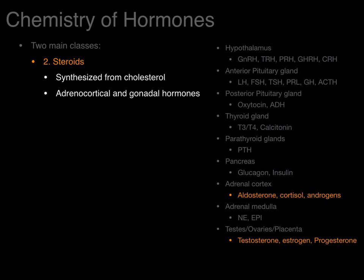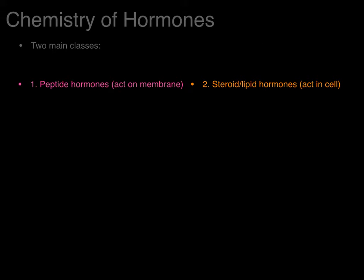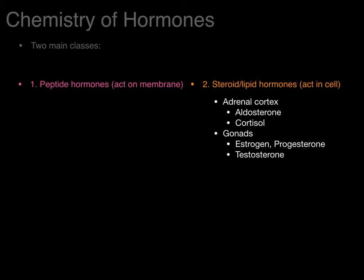Steroid hormones, shown in orange, are synthesized from cholesterol and are primarily adrenocortical and gonadal hormones — aldosterone, cortisol, androgens, and the sex steroid hormones: testosterone, estrogen, and progesterone. Peptide hormones act on the plasma membrane, whereas steroid hormones act inside the cell, intracellularly. The major steroid hormones are aldosterone, cortisol, estrogen, progesterone, and testosterone. Everything else — all other hormones — are peptides.